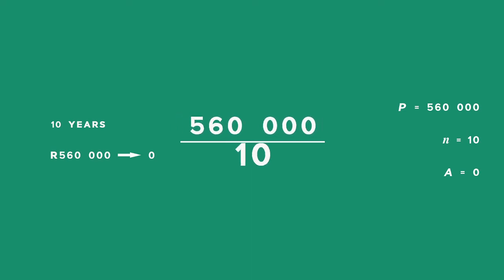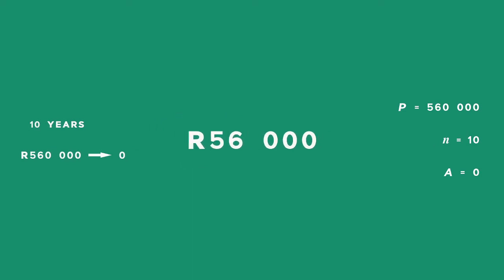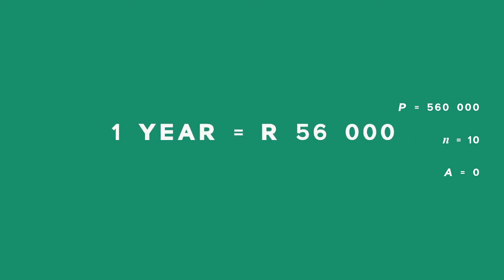560,000 divided by 10 will be 56,000. If in one year my depreciation is 56,000, we can work out in 7 years what the total of the depreciation is.